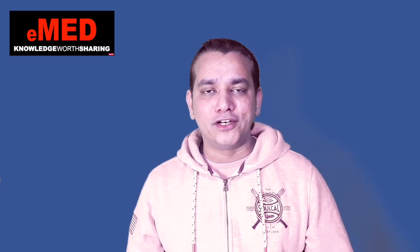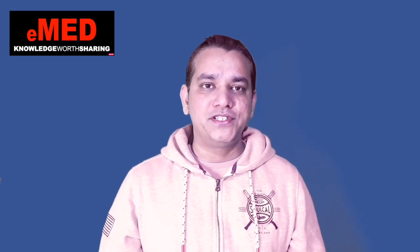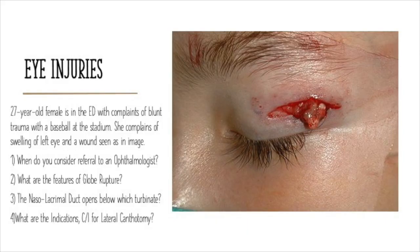That's enough philosophy for now — let's move ahead with eye injuries. In this scenario, a 27-year-old female presents to the emergency department with blunt trauma from a baseball at the stadium. She complains of swelling of the left eye and a wound visible in the image. When do you consider referral to an ophthalmologist? What are the features of globe rupture? The nasolacrimal duct opens below which turbinate? What are the indications and contraindications for lateral canthotomy?